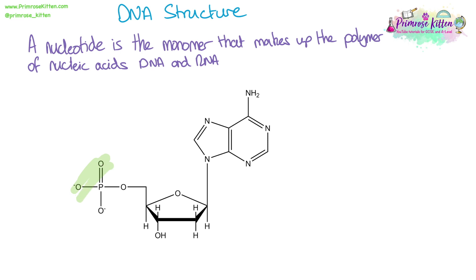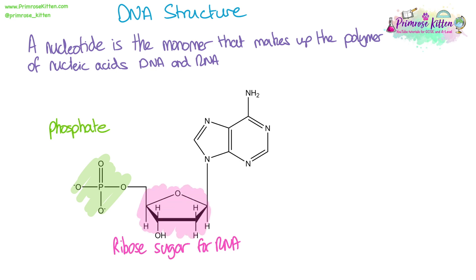Here is the nucleotide diagram. We need to be able to label the structures in a nucleotide and identify them. So we have a phosphate group, we have a sugar — a pentose sugar which will be ribose in RNA and deoxyribose in DNA. That's the difference between the R in RNA and D in DNA: ribonucleic acid or deoxyribonucleic acid.